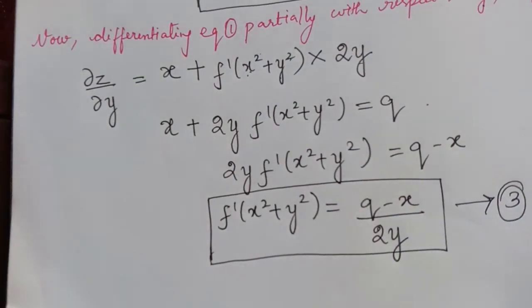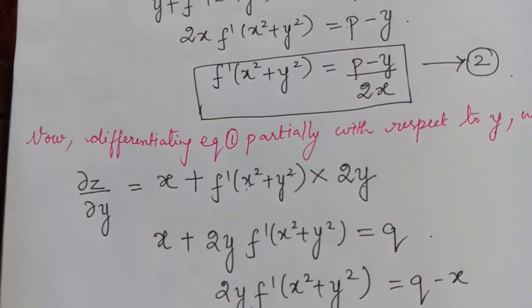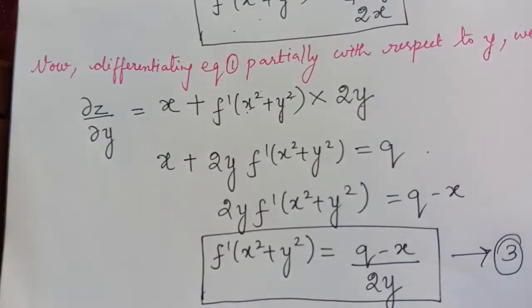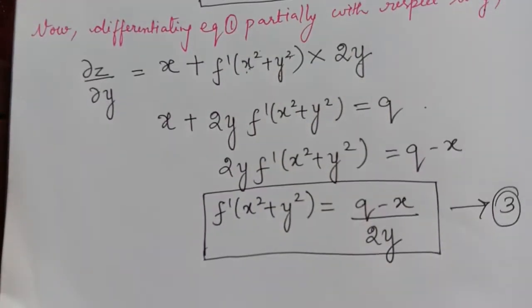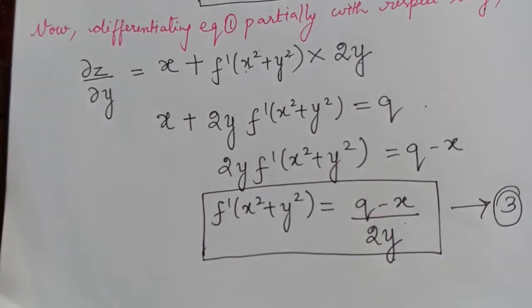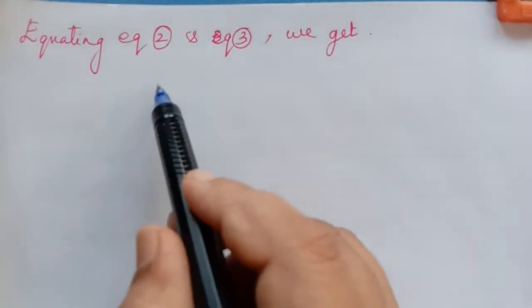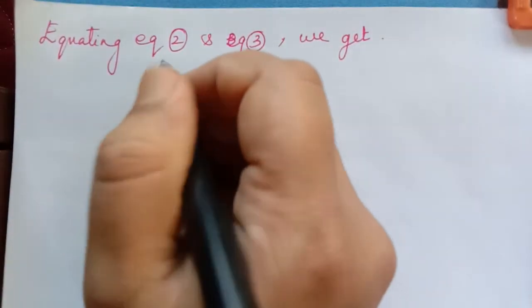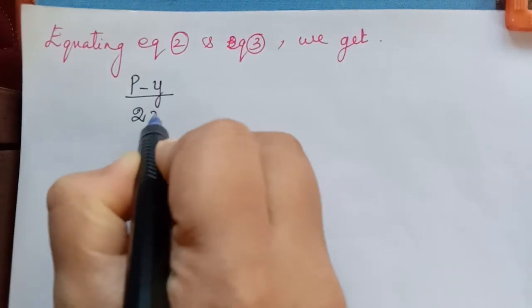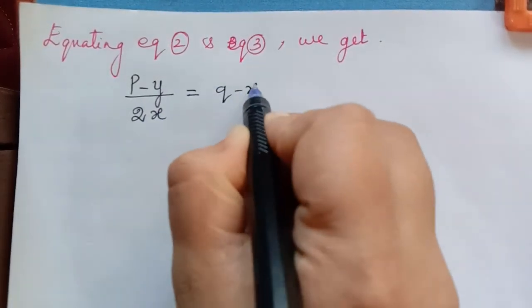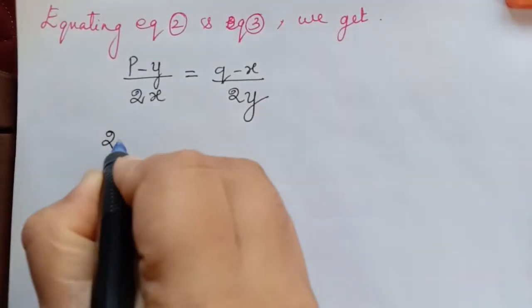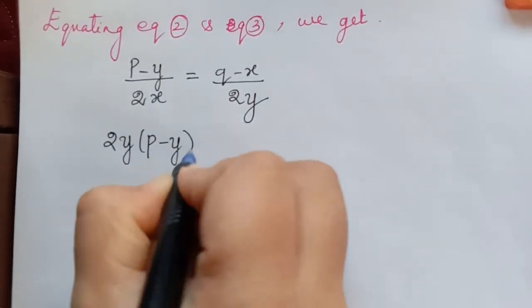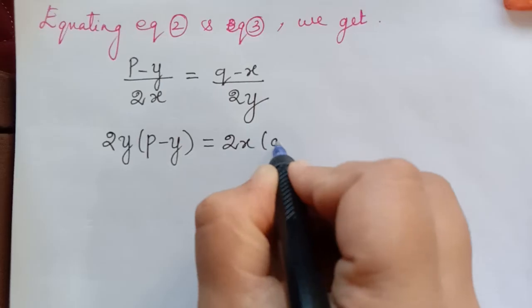Comparing equation 2 and equation 3, we see that f dash(x squared plus y squared) equals (p minus y) divided by 2x from equation 2, and this can be equated to (q minus x) divided by 2y from equation 3. Equating equations 2 and 3: (p minus y) divided by 2x equals (q minus x) divided by 2y. Cross multiplying, 2y(p minus y) equals 2x(q minus x).